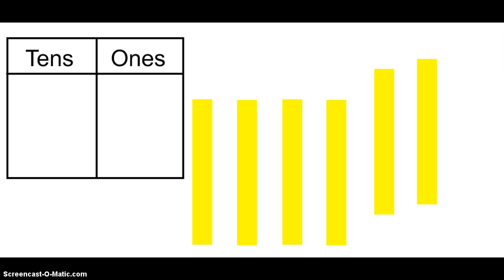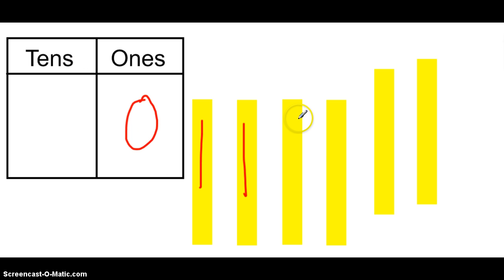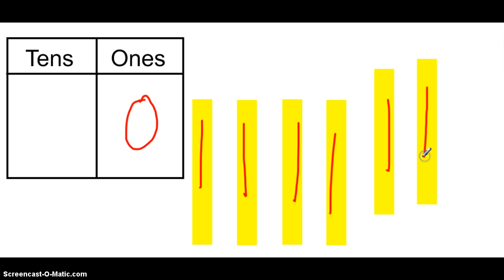How about this? Pause the video and count up — what number am I representing here? Well, let's take a look. I have zero ones cubes, I don't see any there. Let's count the tens longs: one, two, three, four, five, six tens longs. So I'm going to put a six in the tens place. The number that's represented here is 60.